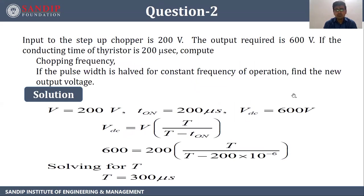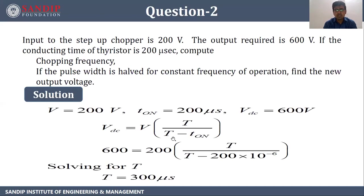Question 2. Input to the step-up chopper is 200 volts. The output required is 600 volts. If the conducting time of the thyristor is 200 microseconds, compute the chopping frequency. And if the pulse width is halved at constant frequency of operation, find the new output voltage. In the question, input voltage is 200 volts, T_on is 200 microseconds, and VDC is 600 volts. Therefore, we know that VDC equals V into T upon T minus T_on.